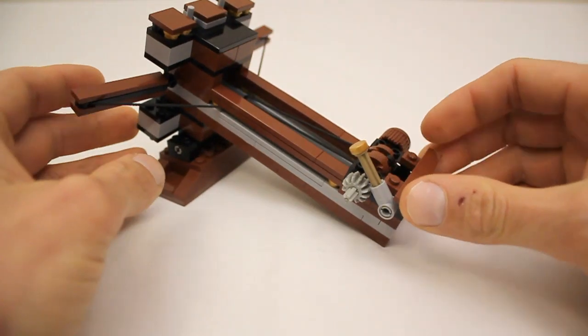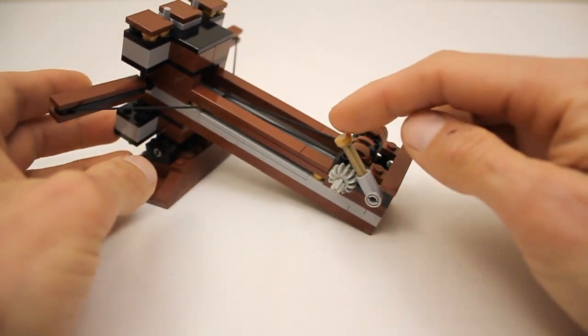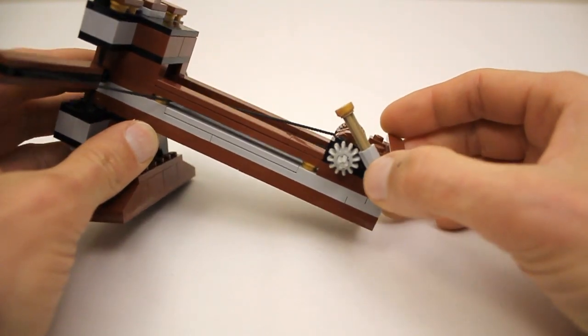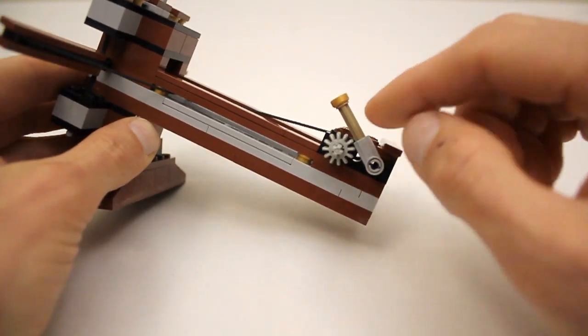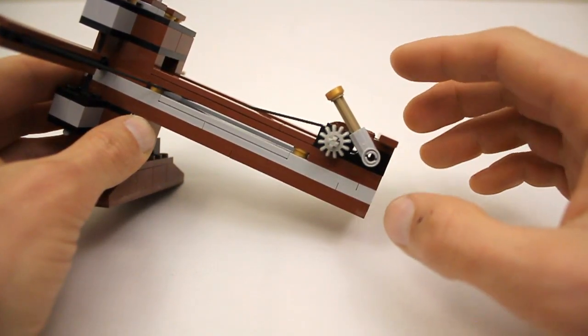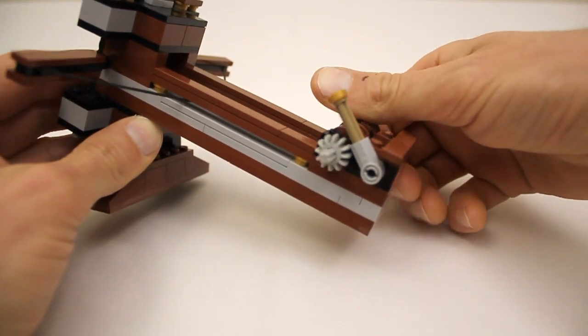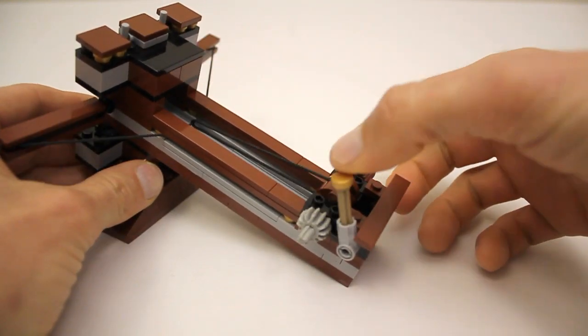In the back I have a simple ratcheting system. It's just a lever and a Technic gear. The end of this connector at the base of the lever catches on the teeth of the gear, which allows you to wind it up. But it won't release until you lift the lever.